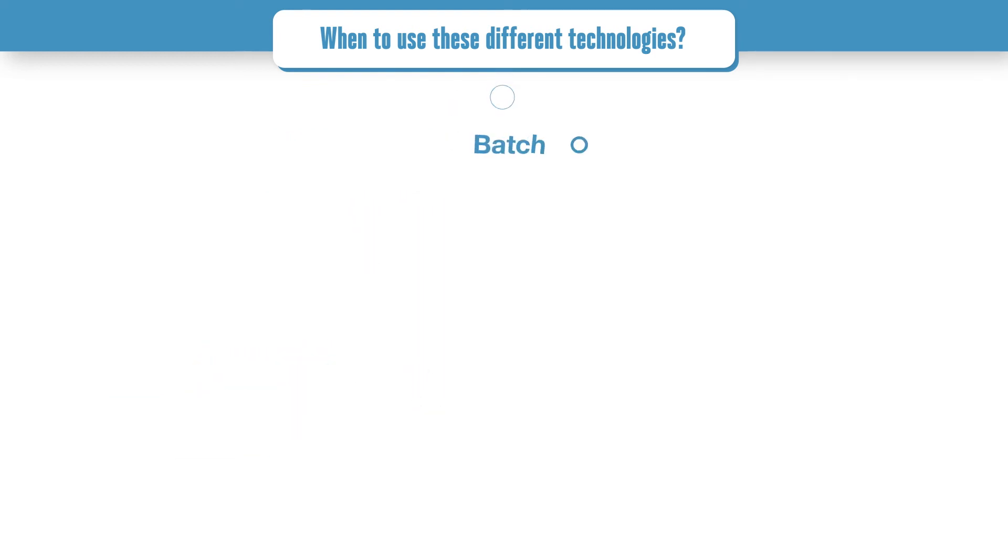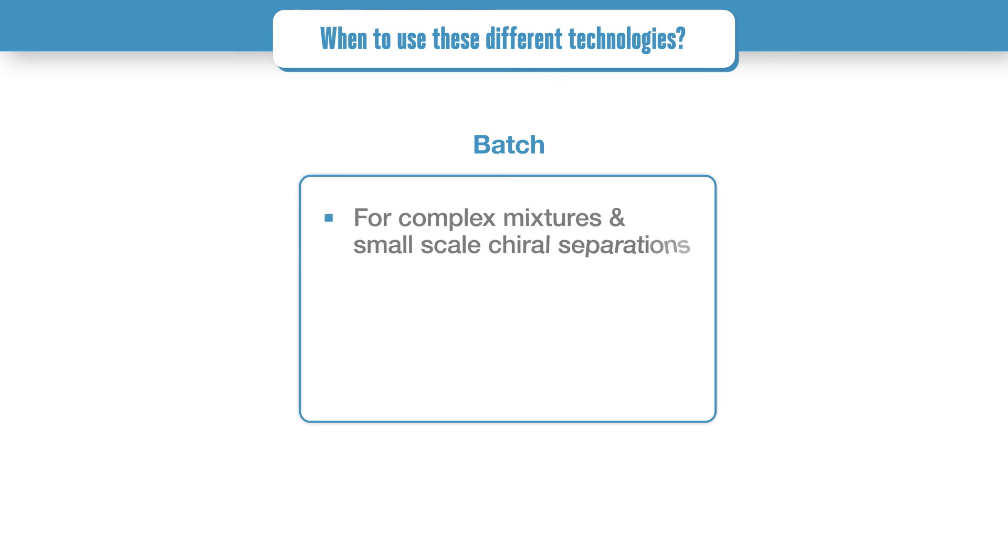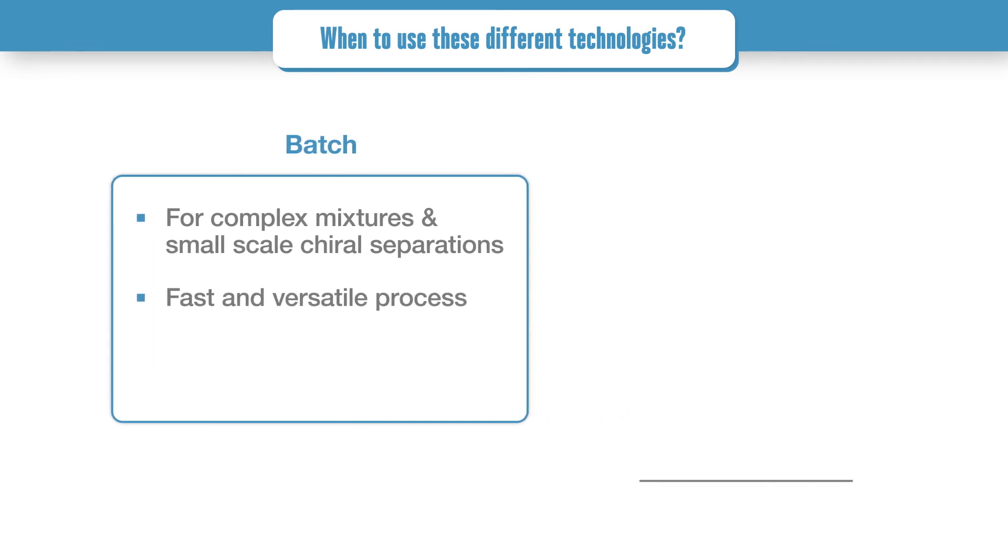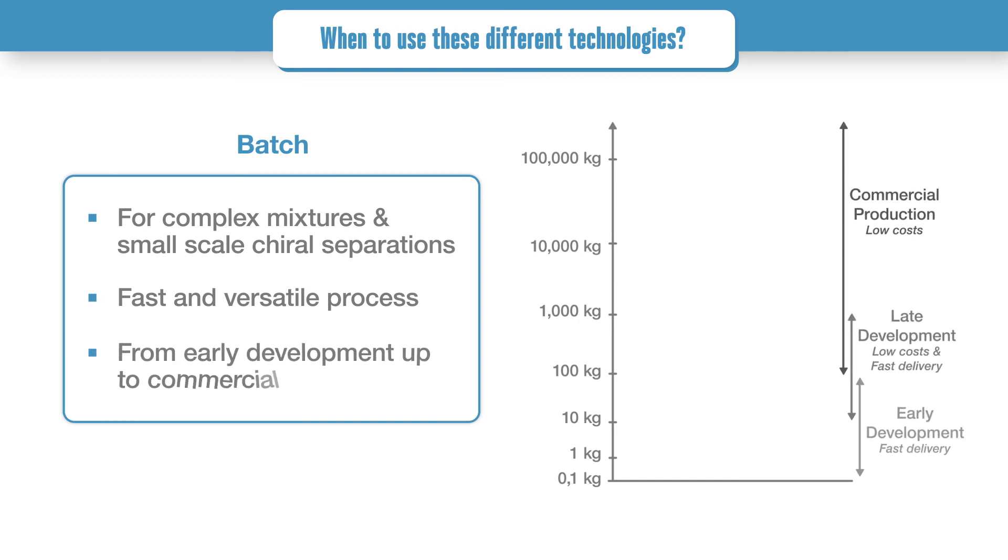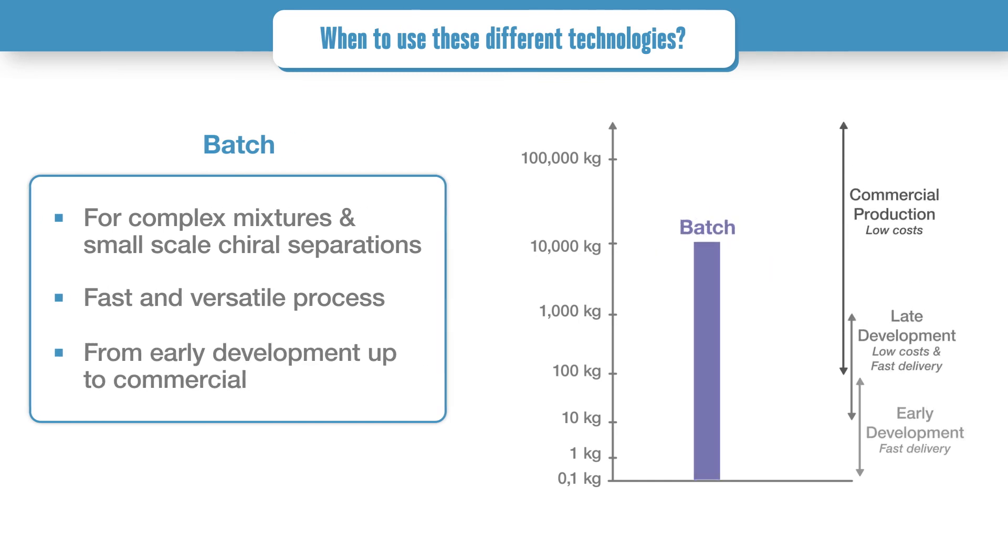Batch chromatography is the preferred technology for purification of complex mixtures, requiring gradient or multi-step eluting conditions. It is also suitable for small-scale chiral separations. A fast and versatile tool, Batch is adapted for supplying your target compound from early and late development scale to commercial manufacturing.